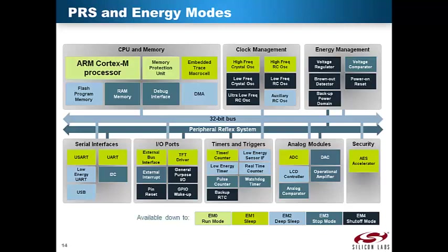PRS supports operation down to Energy Mode 3. When using PRS in low energy modes, it is important to acknowledge that both the producer and the consumer peripheral must be able to operate in the wanted energy mode. For example, where periodic A-to-D conversions are triggered by the timer, we can read from the color codes in the block diagram that both peripherals are available down to Energy Mode 1, so no lower energy mode can be used. The pulse width measurement example uses the analog comparator and the timer. The analog comparator is available down to Energy Mode 3, but since the timer requires Energy Mode 1 or above, the EFM32 cannot use any energy mode below Energy Mode 1.